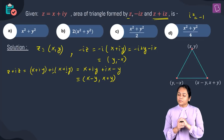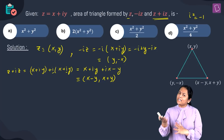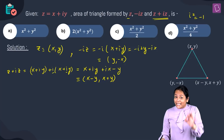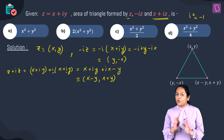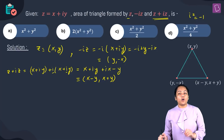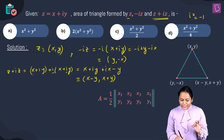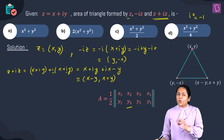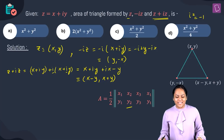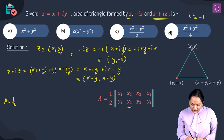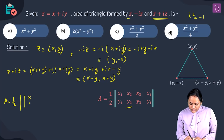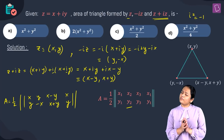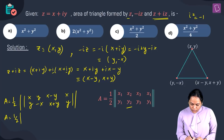Now with all three vertices, we apply the area formula from straight lines: area equals half times the modulus of the determinant with vertices (x₁,y₁), (x₂,y₂), (x₃,y₃) back to (x₁,y₁). Substituting: the determinant uses (x, y), (y, -x), (x-y, x+y), back to (x, y).